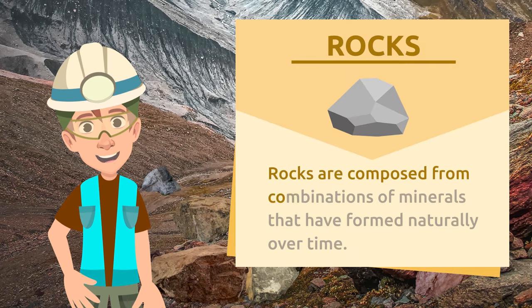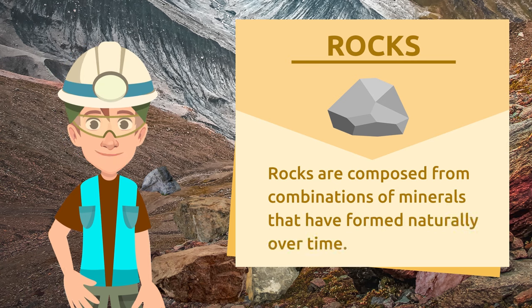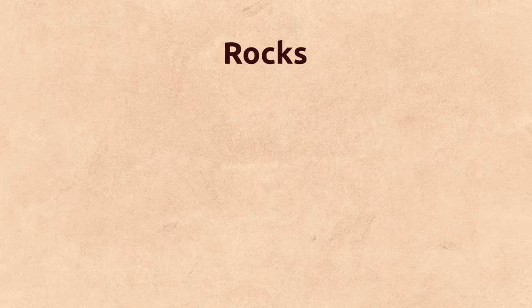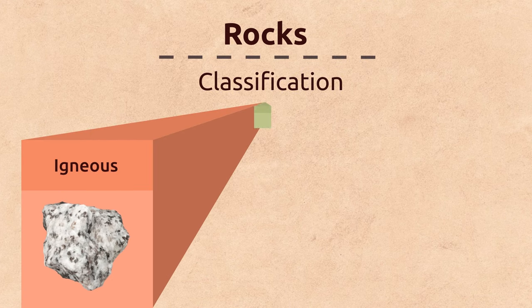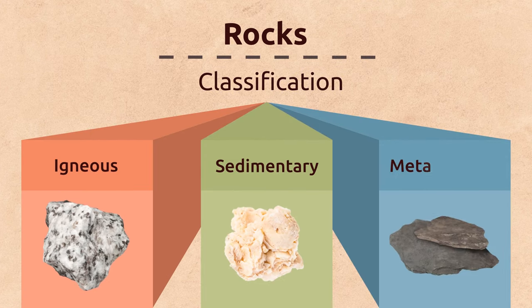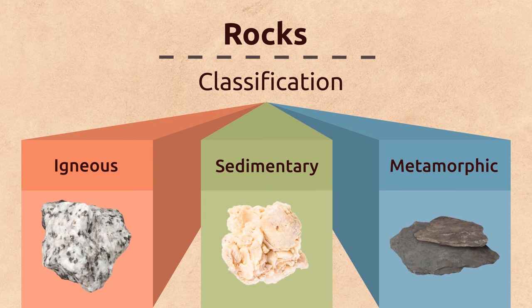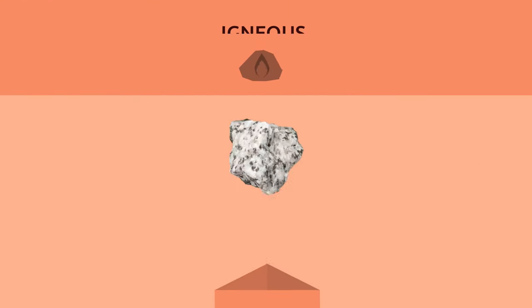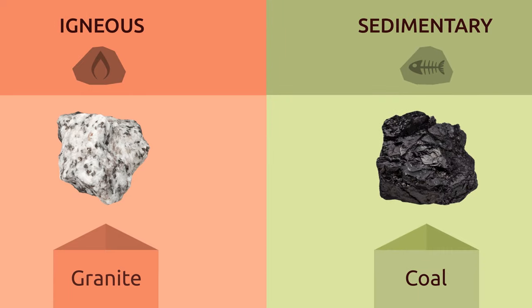Rocks are composed from combinations of minerals that have formed naturally over time. On the basis of their origin, rocks can be classified as igneous, sedimentary, and metamorphic. Let me show you some examples of rocks — this is granite, rock coal, and marble.